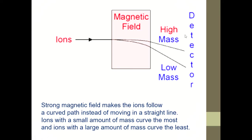Next, we are going to explain a little bit about what happened in the magnetic field. Strong magnetic field will make the ion follow a curved path instead of moving it in a straight line. So ion with small amount of mass will curve the most. So it will be here. But when it is heavy, it will be difficult to curve it. So there you go.